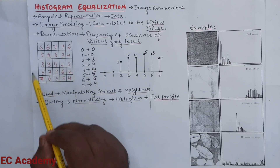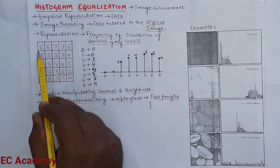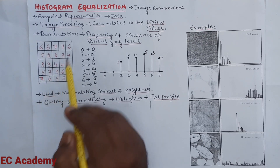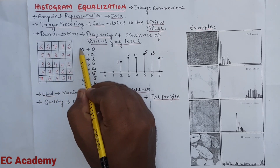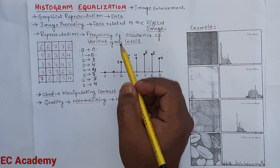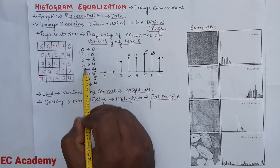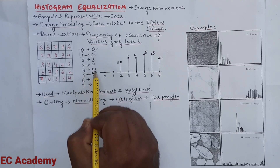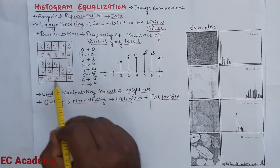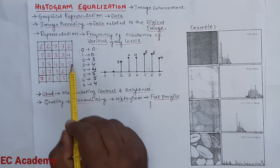Let us take an example. This shows a digital image with various gray levels. In this digital image, we do not have any gray level with value 0 or 1, so those are written as 0. Gray level value 2 has occurred 3 times, 3 has occurred 4 times, 4 has occurred 4 times, 5 has occurred 5 times, 6 has occurred 6 times, and 7 has occurred 4 times.